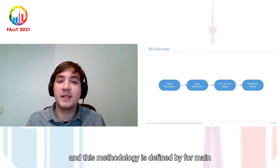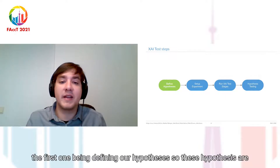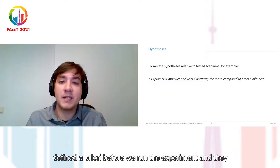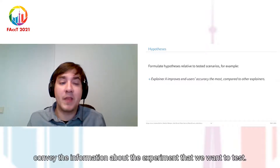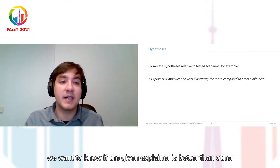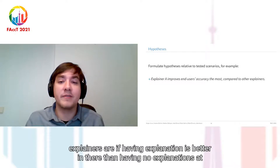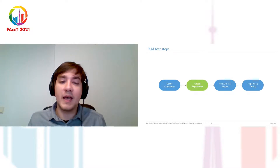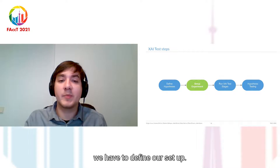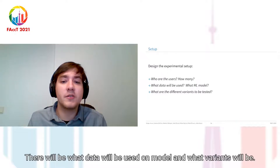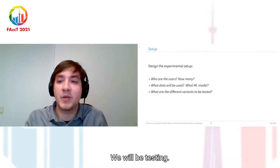This methodology is defined by four main building blocks. The first one is defining our hypotheses. These hypotheses are defined a priori before we run the experiment and convey the information about what we want to test — for example, whether a given explainer is better than others, or whether having an explanation is better than having no explanation at all. After defining our hypotheses, we define our setup, answering questions such as who are the users, how many there will be, what data and model we will use, and what variants we will be testing.